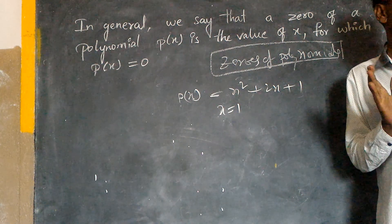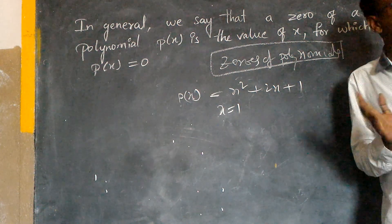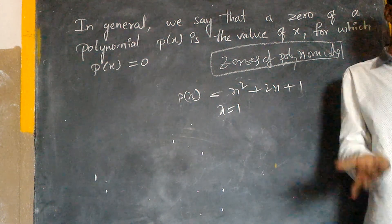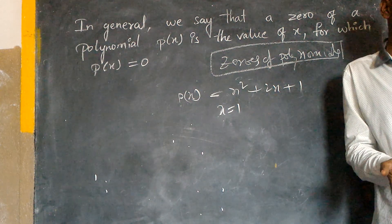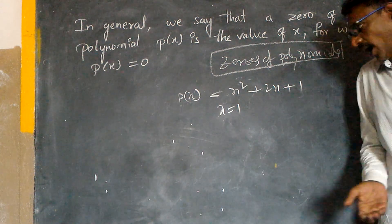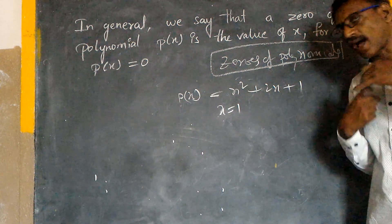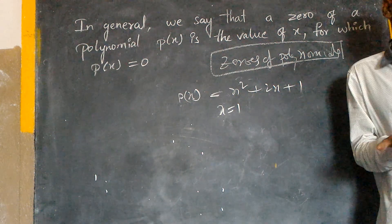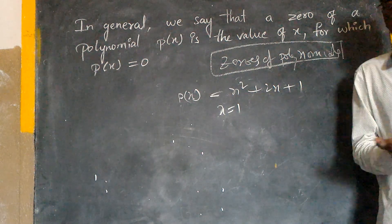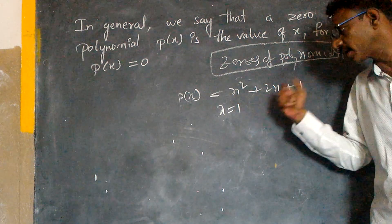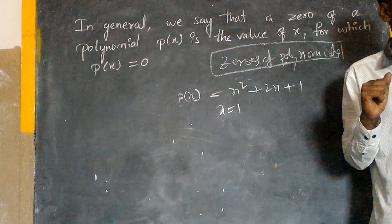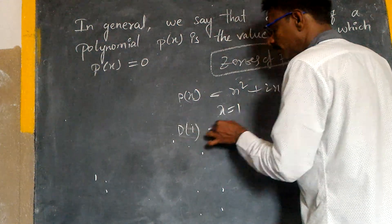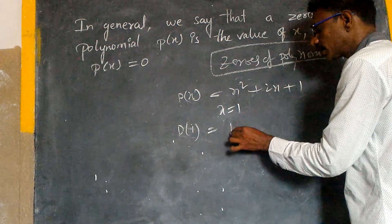All normal numbers are the numbers — variable numbers, unknown numbers. That variable number is the number. What is the variable number? One is the number. P of one is the number. What is the number?